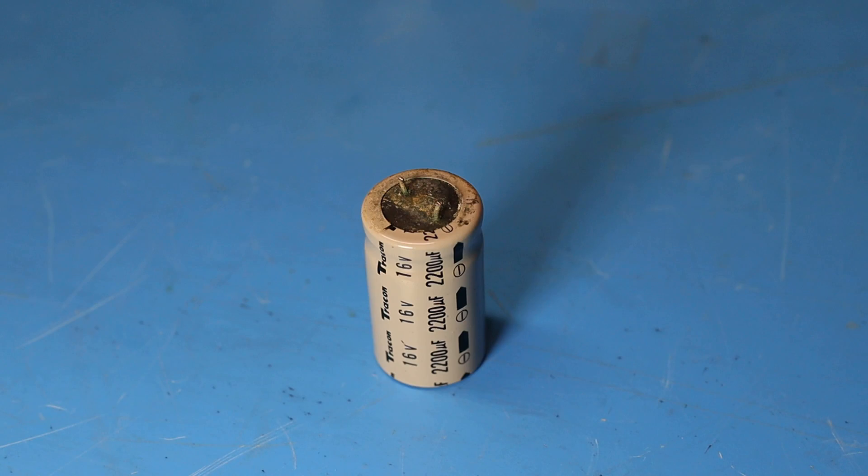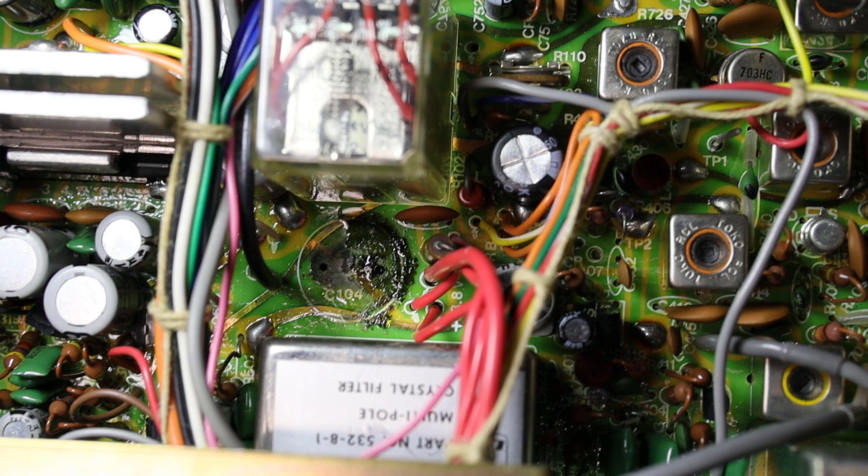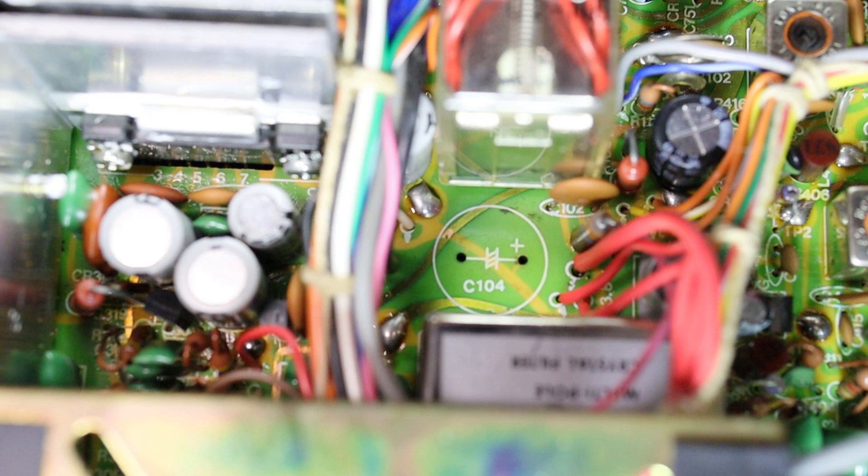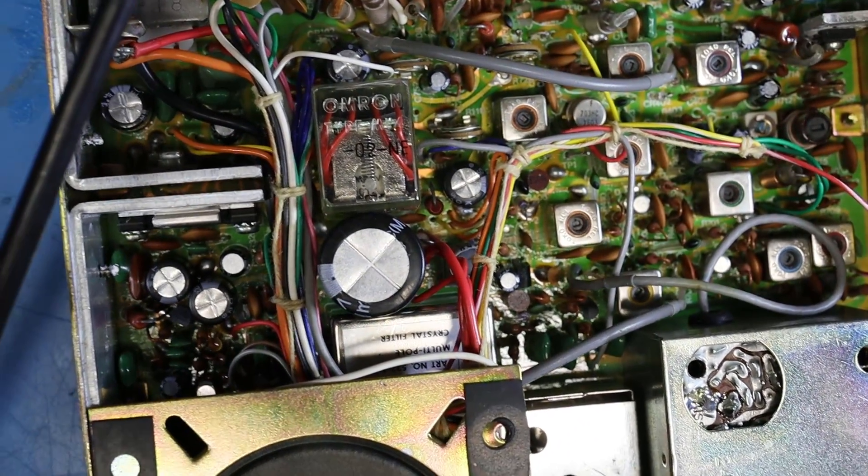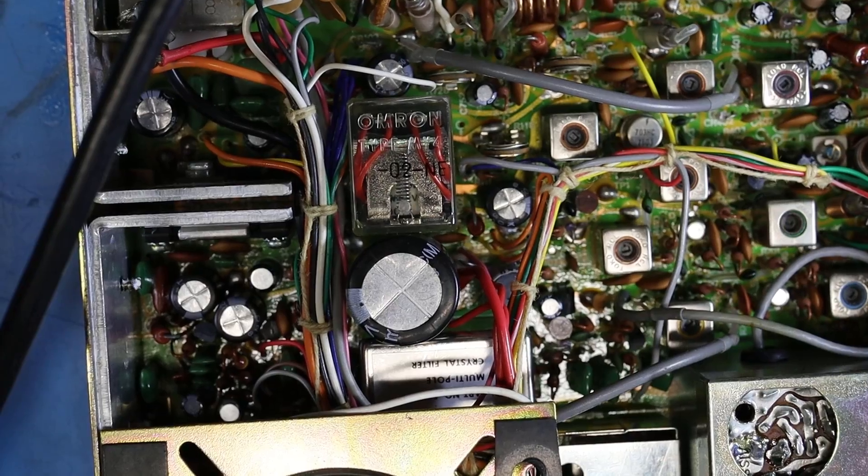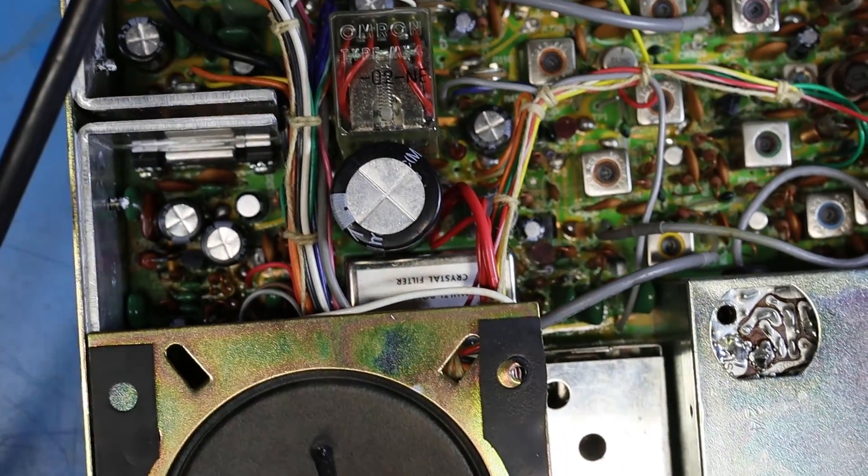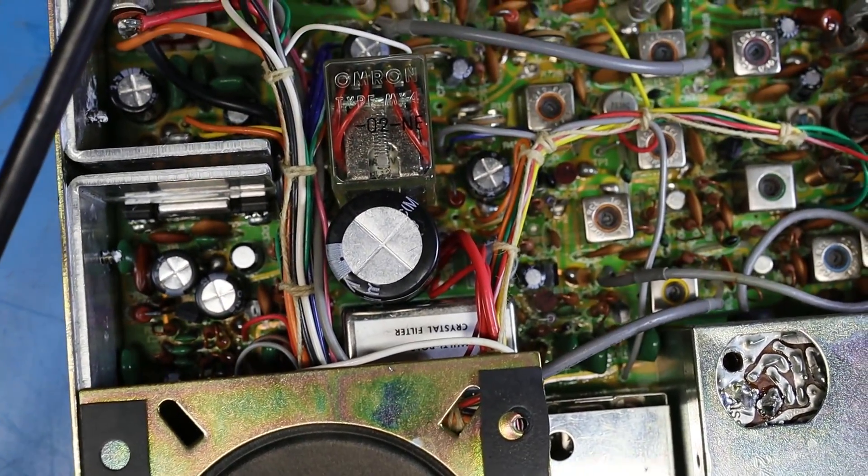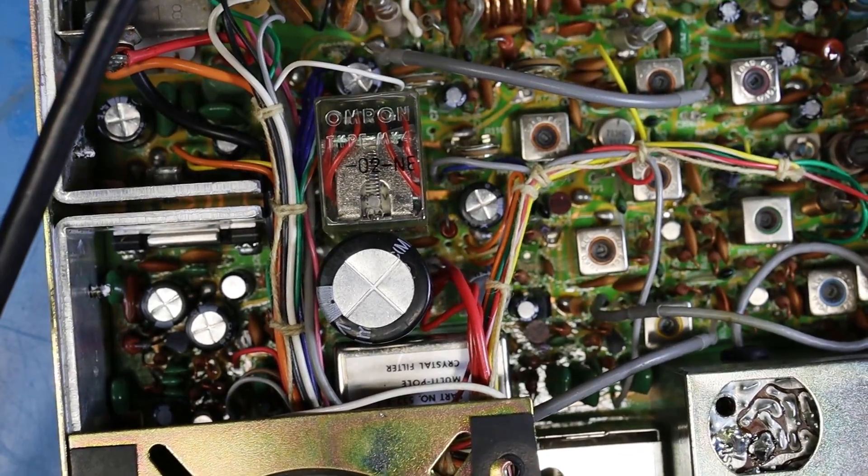After removing the large 2200 microfarad capacitor that's near the relay I realized it had been leaking. Luckily it didn't leak so bad that it ruined the circuit board so I caught it in time. I was able to clean up the old electrolyte from the circuit board surface. But I did run into a little bit of trouble putting the new cap in because it was just a little bit wider than the old one and I kind of had to force it in between the crystal and the relay to get it to fit.